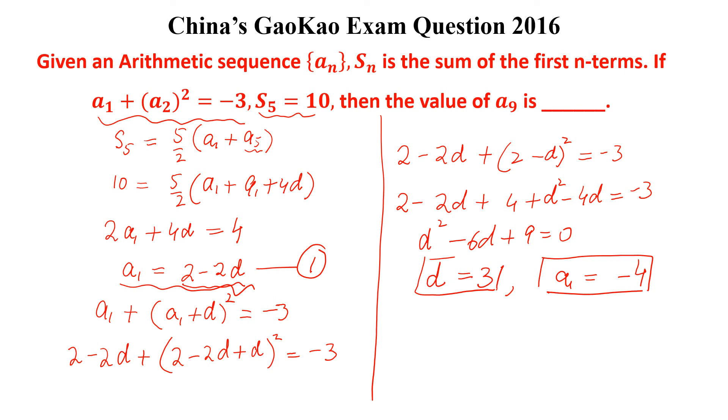Now we can find a_9, so a_9 will be equal to a_1 + 8d. And a_1 is -4 plus 8 × 3, and this is equal to 20. So this is the required answer.